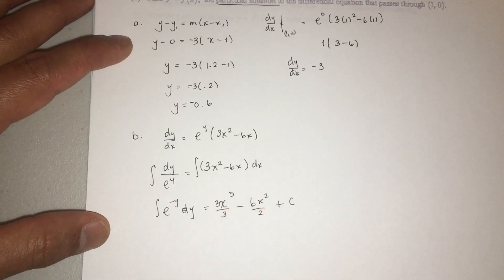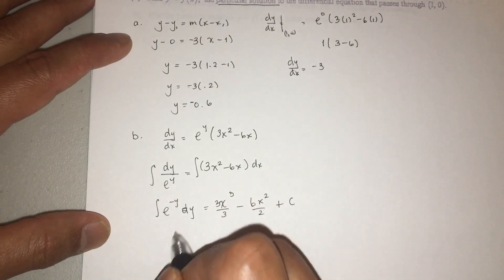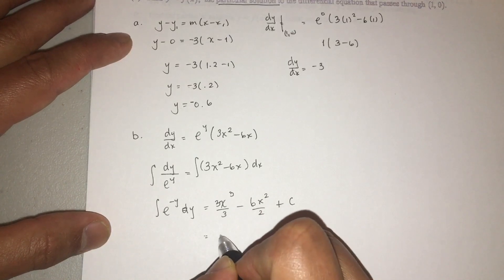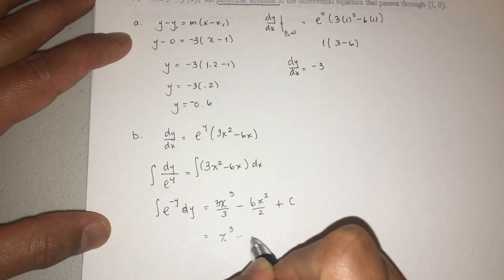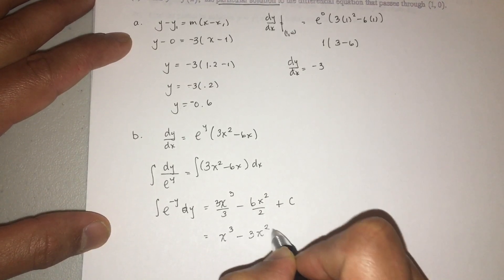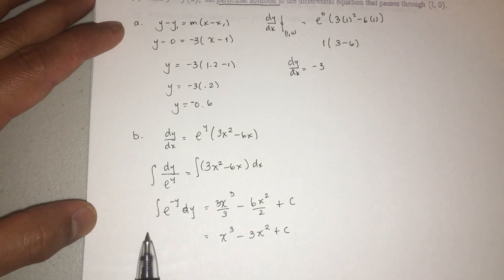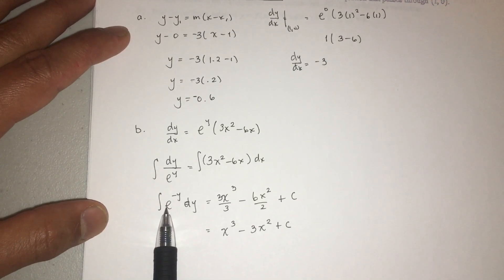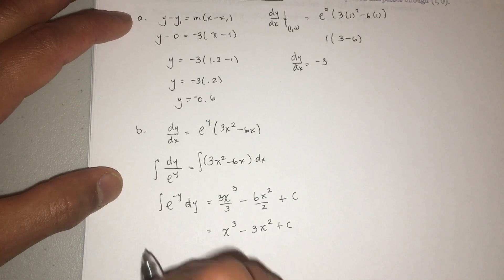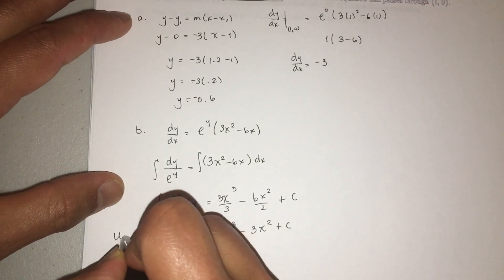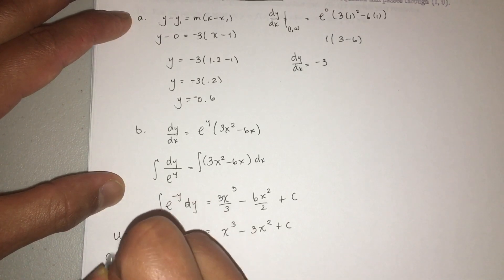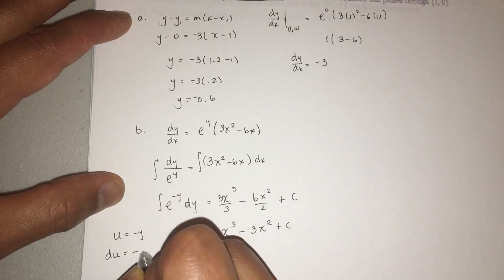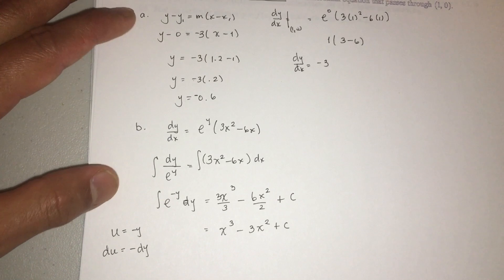And it will help you if you kind of get lost. So 3x^2, the antiderivative, you add one, becomes x^3. I'll just do it the long way. 3x^3/3 - 6x^2/2 + constant c. And this guy becomes x^3 - 3x^2 + c.